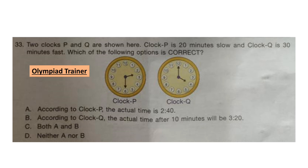According to option A, the actual time per clock P is 2:40 — that is wrong, as the actual time is 2:50. Option B says the actual time after 10 minutes according to clock Q would be 3:20 — also wrong, because the actual time is 3:30, and after 10 minutes it would be 3:40. So option D is the answer: neither A nor B.